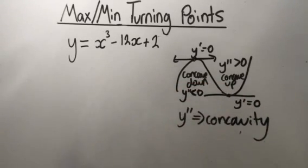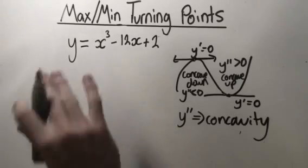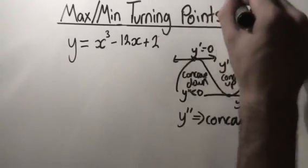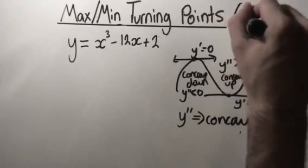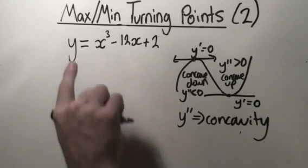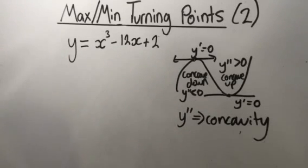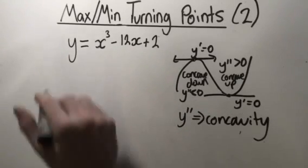But what if the second derivative is too hard to find, or it's going to take too much time for a question? Well, there is another way that we can find whether a turning point is a maximum or minimum. This is the second way. Let's say we have this example: y equals x cubed minus 12x plus 2.